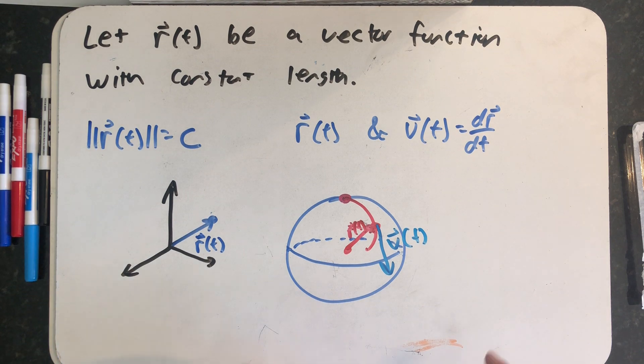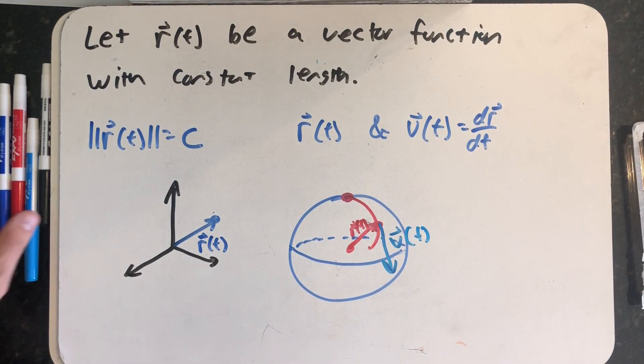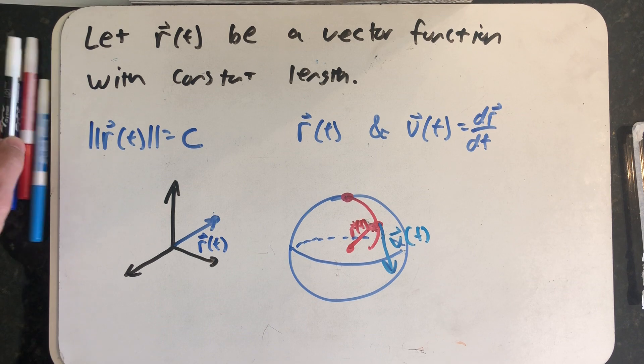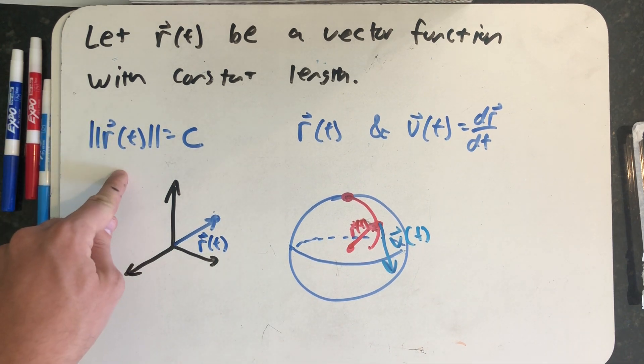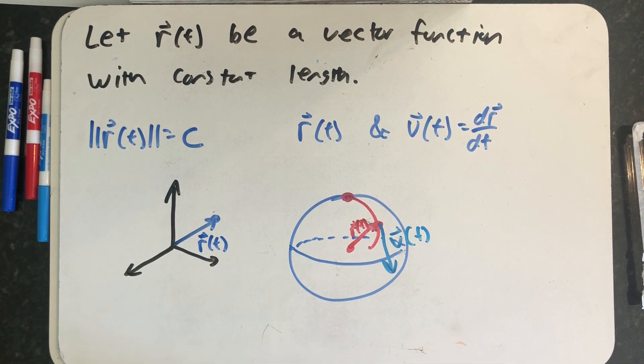I really would love to know what y'all just said, or if you just fast forwarded until I started talking again. But I'm hoping that you thought maybe those two vectors are perpendicular, because they are. And based on this assumption that R of t has constant length, we can actually prove that the position and velocity vectors are perpendicular to each other.